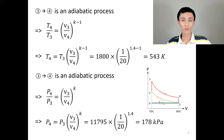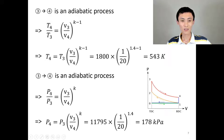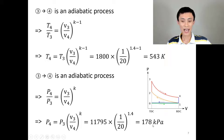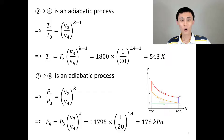For state 4: process 3→4 is another isentropic process, so we apply the temperature and pressure relations. The volume ratio v3/v4 equals one over the compression ratio. This gives us T4, and similarly p4 turns out to be 178 kPa. We now know the temperature and pressure at all four states — states 1, 2, 3, and 4.